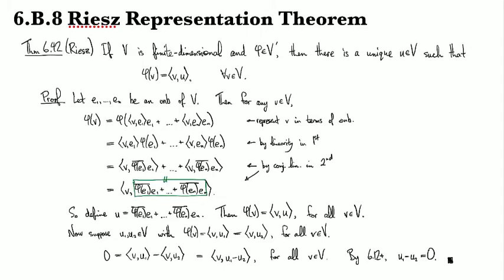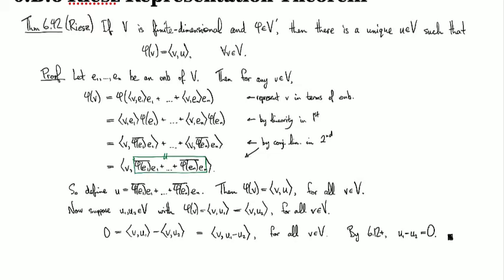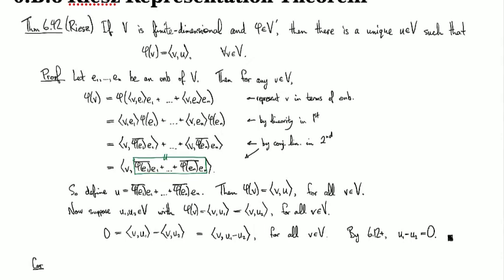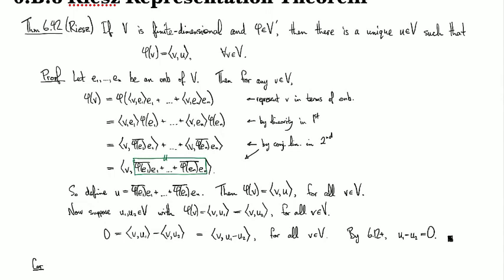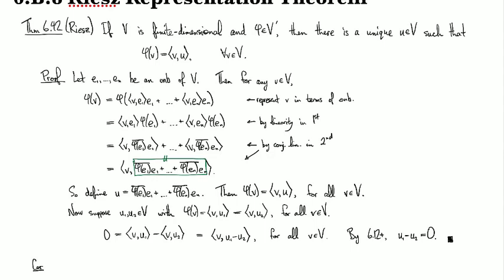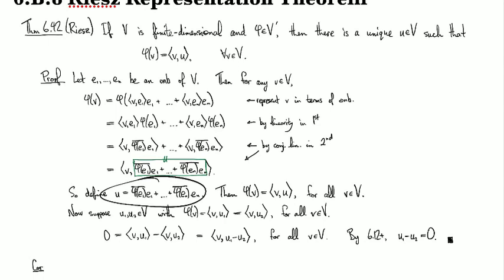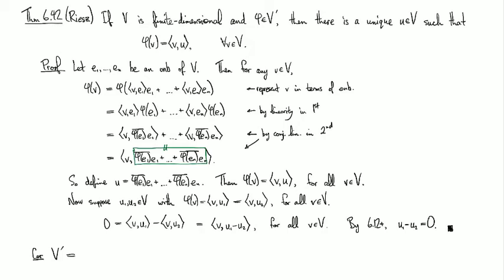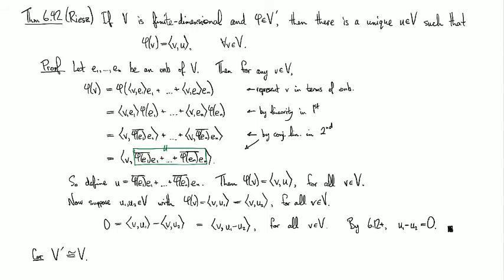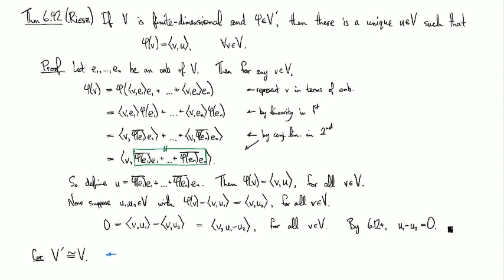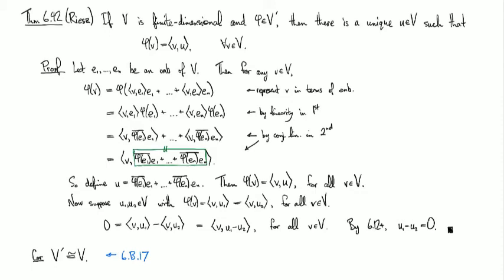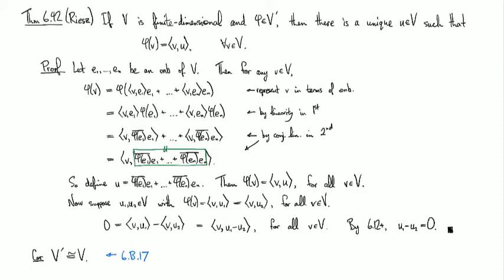Now, it's worth pointing out that there's a nice way to sort of encapsulate what we've just said here. It's easy to check that this transformation from Φ to this sum that we just had, this sum right here, that's a linear transformation. And so what we've actually shown is that V prime is isomorphic to V. And I'm not going to prove it here because this is actually the content of 6B.17. And so I'll leave this one for you to do here in this one that we were looking at.